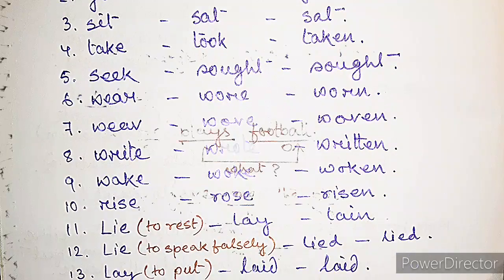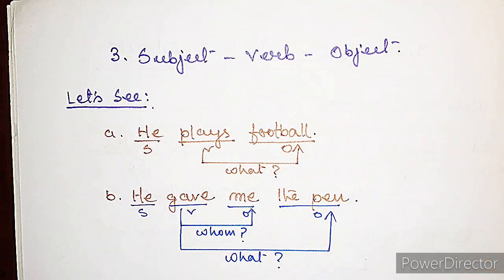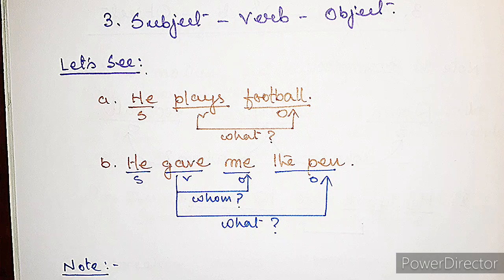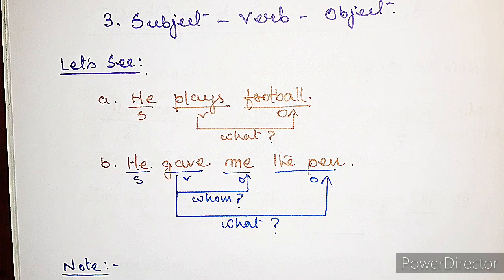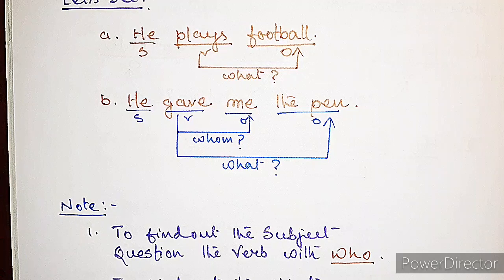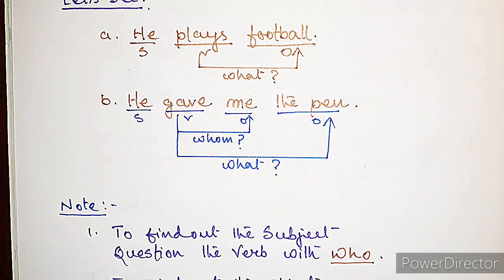Now let's see how to identify the subject, verb, and object in a sentence. Example one: 'He plays football.' The verb is 'plays'. Questioning with 'who' gives the answer 'he' — so 'he' is the subject. Questioning with 'what' gives 'football' — so 'football' is the object. Example two: 'He gave me the pen.' The verb is 'gave', subject is 'he', and 'the pen' is the object found by asking 'what.'